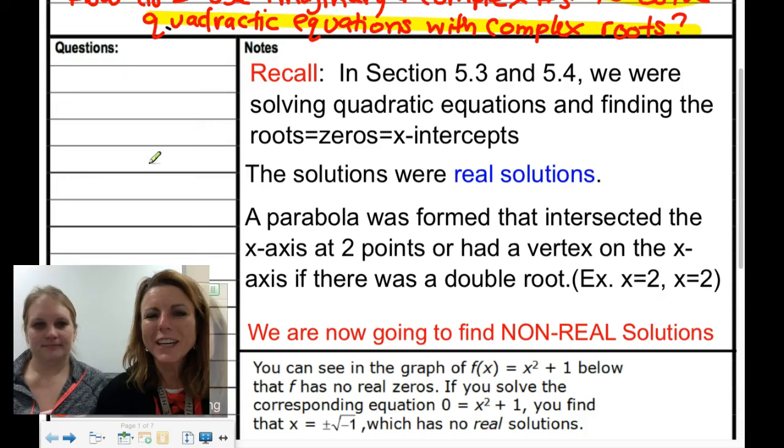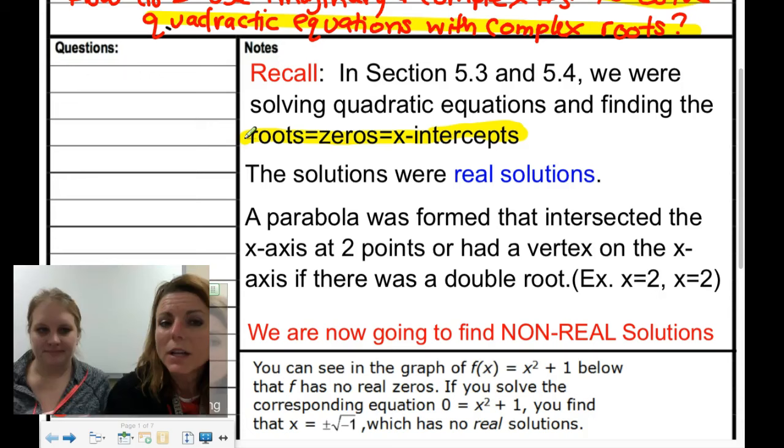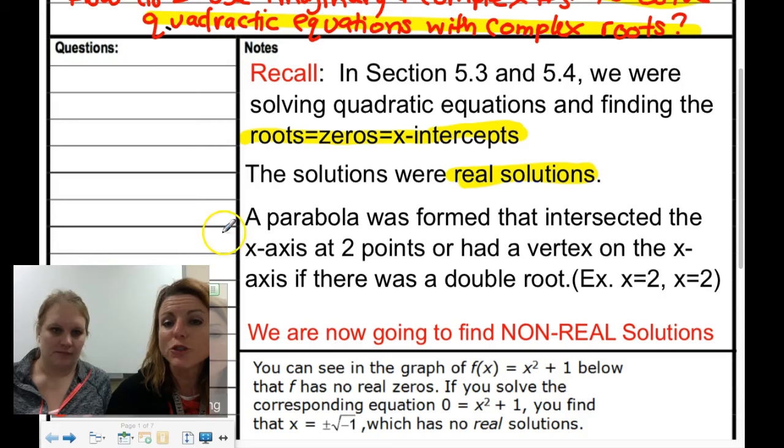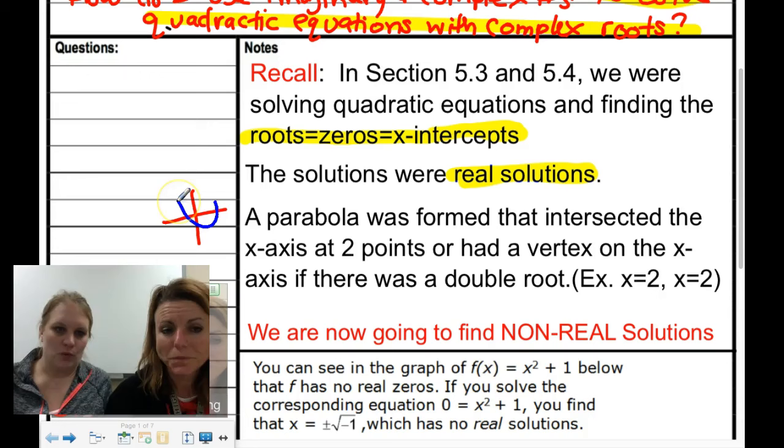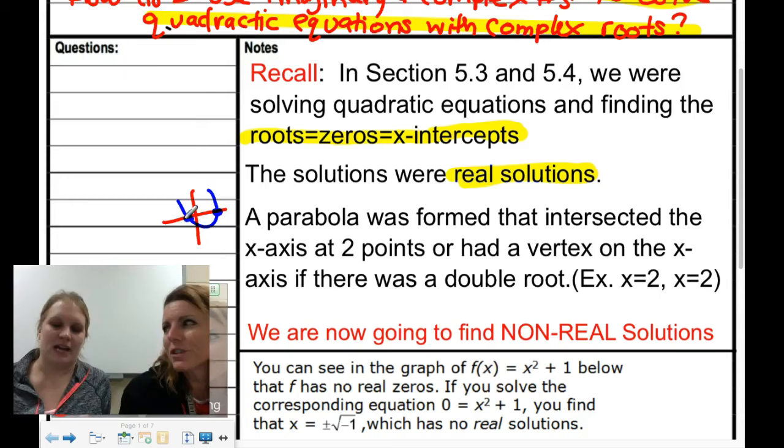Now we're going to do a little recall here. We're bringing back section 5.3 and 5.4. Remember, we were solving quadratic equations and finding the roots or zeros or x-intercepts. The solutions were real solutions. A parabola was formed that intersected the x-axis at two points, or we had a vertex on the x-axis if there was a double root.